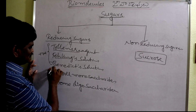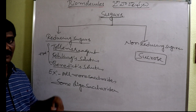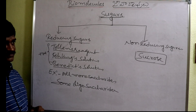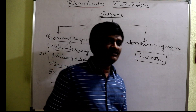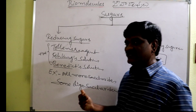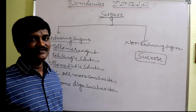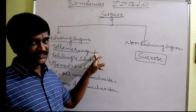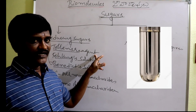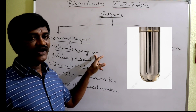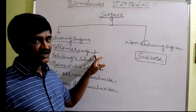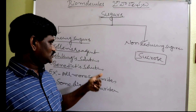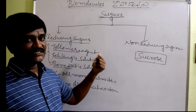Tollens reagent is an ammoniacal solution of silver nitrate. Tollens reagent gives the silver mirror test. Aldehydes and alpha-hydroxy ketones also give the Tollens reagent test. Fructose has a ketone group but still gives a positive Tollens test.